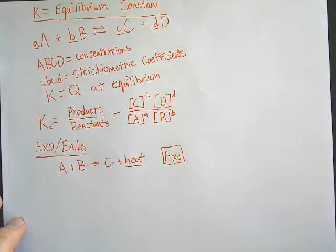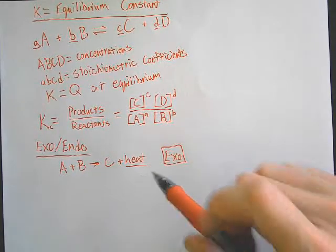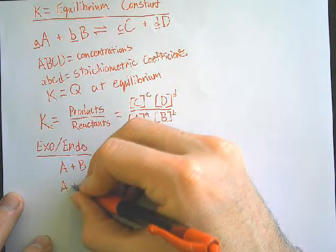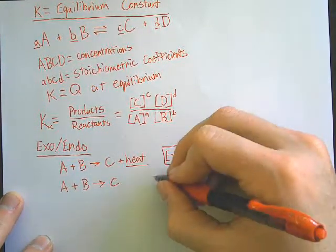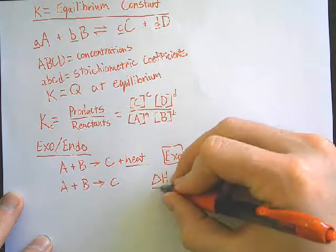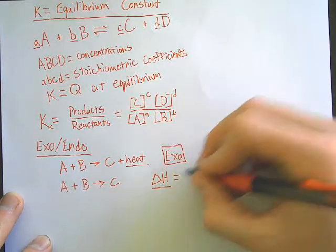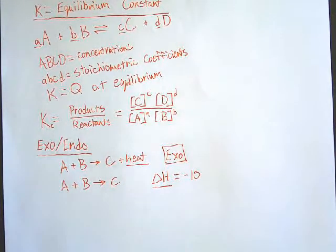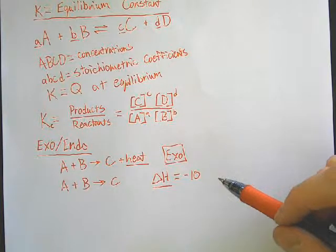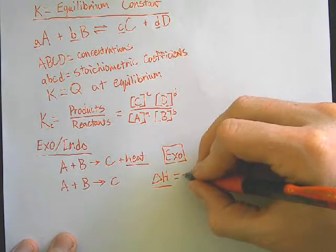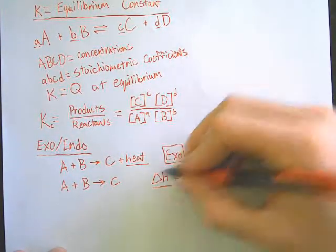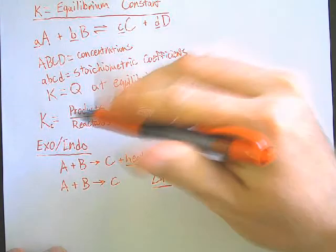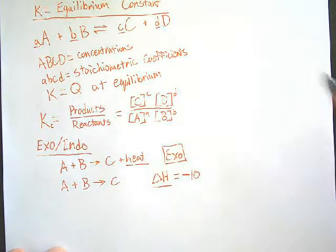Exothermic reactions with heat on the product side aren't always written that way. What if I had something like A plus B goes to C, but then I said my change in enthalpy, delta H, is going to be equal to, let's say, minus 10? Notice this guy right here — it's a negative number. Your delta H is negative. The way you do this — we're coming back to products over reactants — it's products minus reactants. Always start with the products, subtract or divide by the reactants.